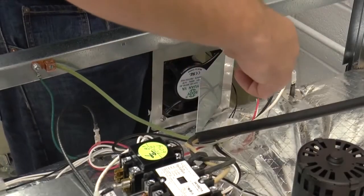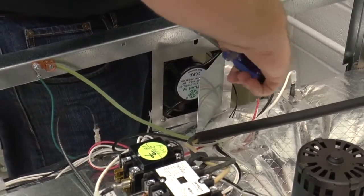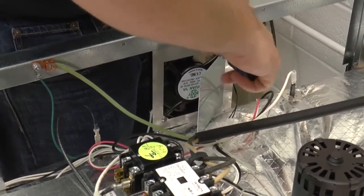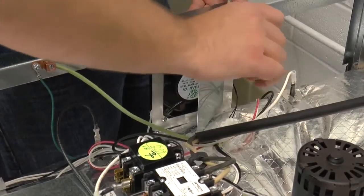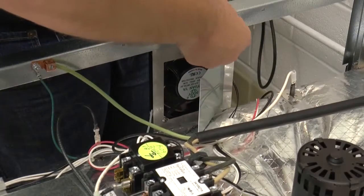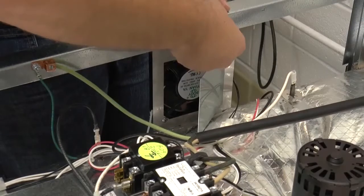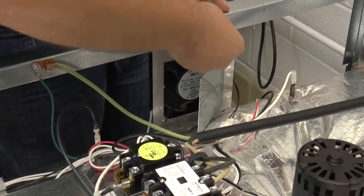Using a three-eighths inch nut driver, loosen the inside nut at the top. Once it feels loose, use both hands to remove the nut and screw that is holding the cooling fan plate to the unit.